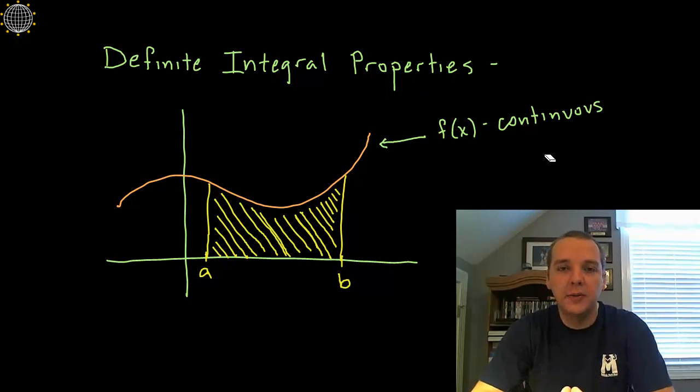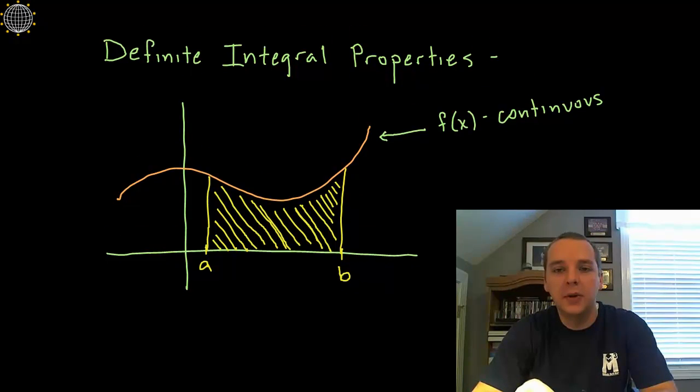There are other properties for definite integrals, but I'm only going to look at the ones that are pertinent just to definite integrals. A lot of the properties carry over from indefinite integrals, like you're allowed to pull out a constant outside the integral or the sum and difference rule. But here I'm just looking at the ones specifically related to just definite integrals and finding the area under the curve. So here we go.